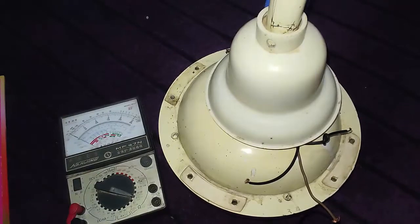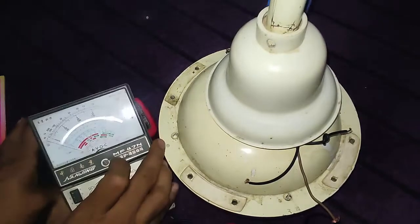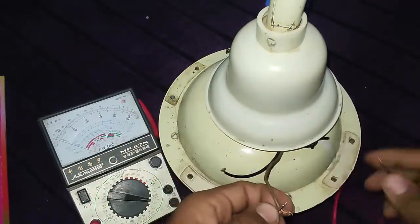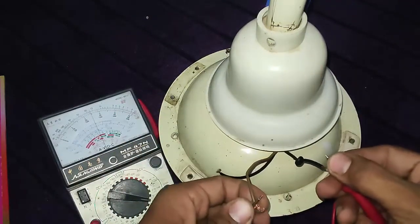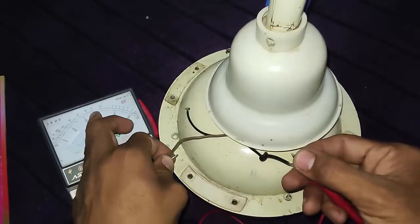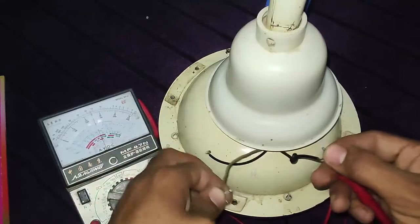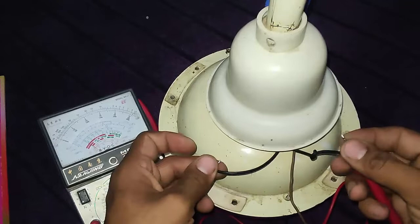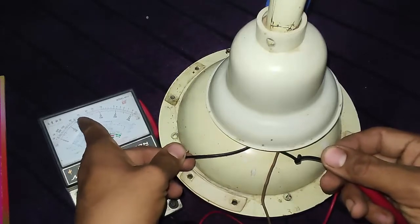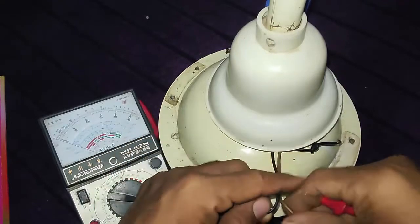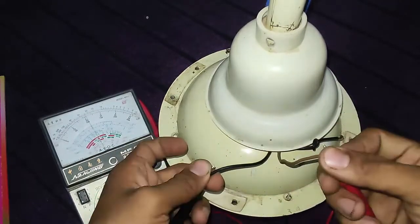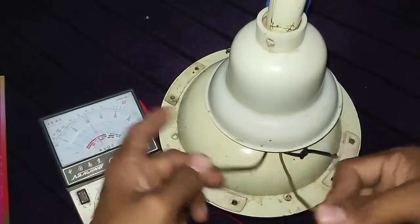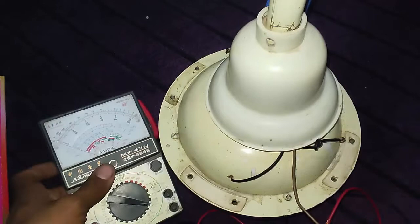Now I will check it. If I test these two wires, you can see the resistance is 15. And if I test these two wires with one another, the resistance is almost 40 ohms. And in this case with these two wires, resistance is almost 25 ohms.